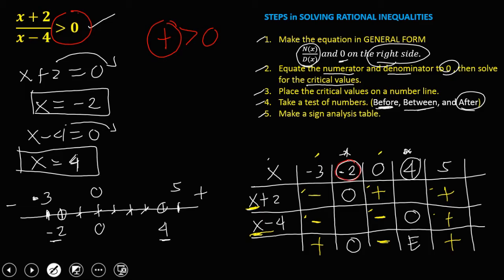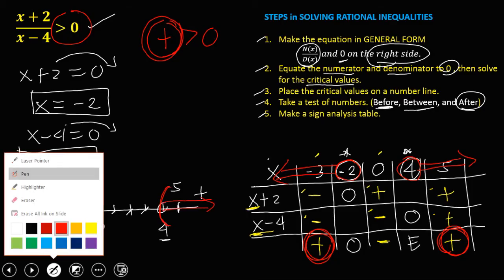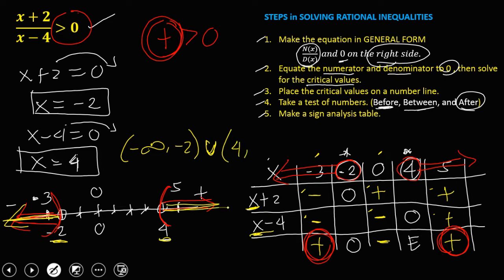Since all positive numbers are greater than 0, just look for the positive result. We have positive on the left of negative 2, and also positive on the right of positive 4. To write this in interval notation: from negative infinity to negative 2, union positive 4 to positive infinity. This is the solution.